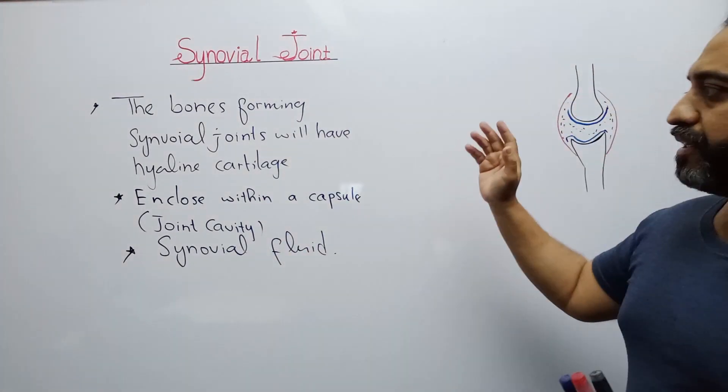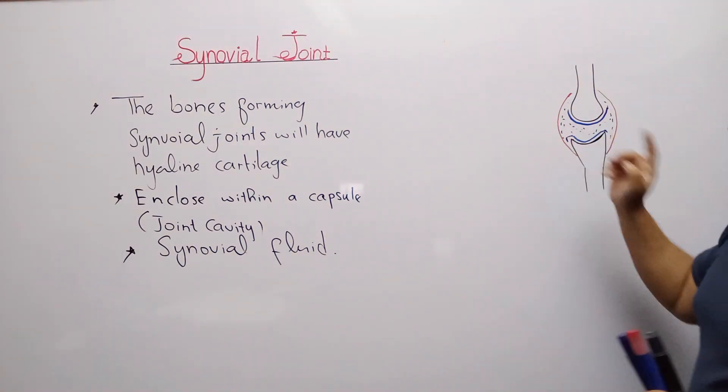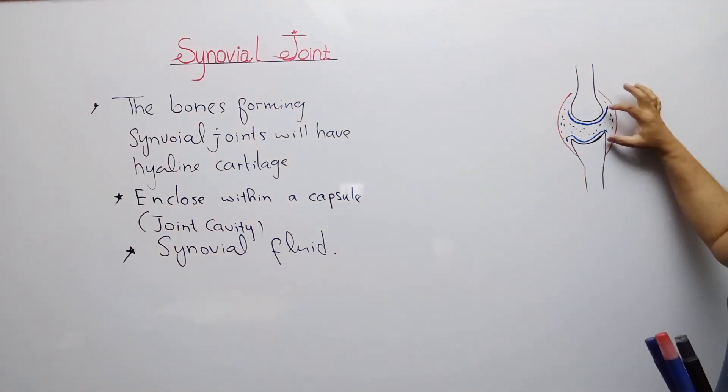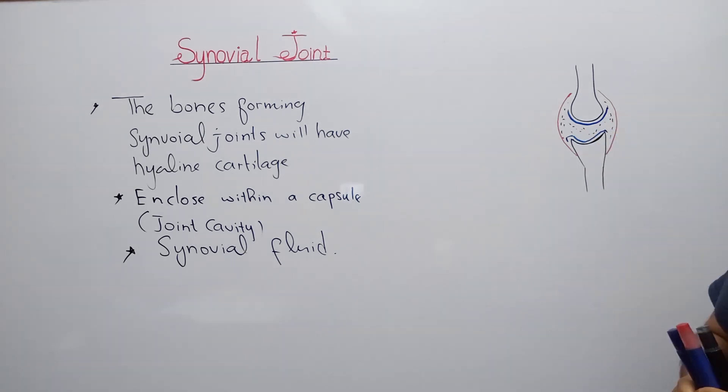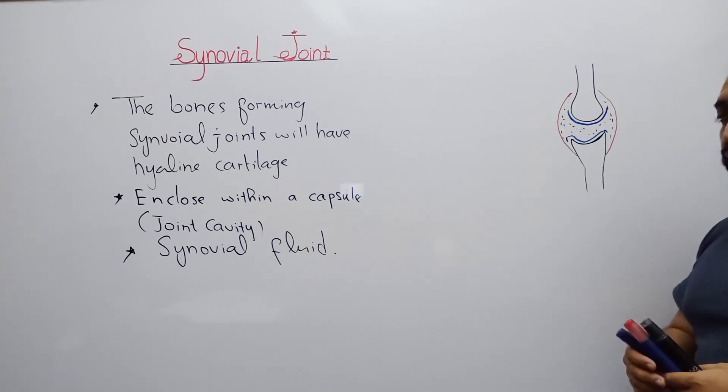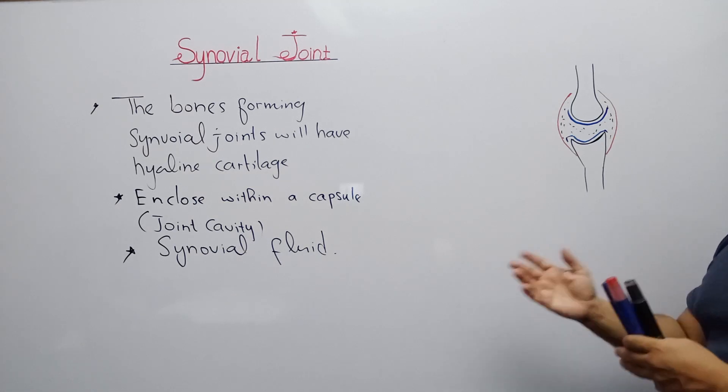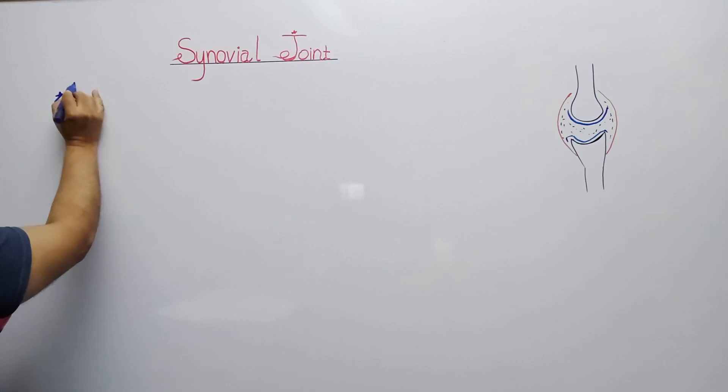Today we learn about synovial joints. Synovial joints are the joints where bones have cartilage called hyaline cartilage. There is present a capsule called the joint cavity, and within the joint cavity there is present a fluid called synovial fluid. Synovial joints are of six types.